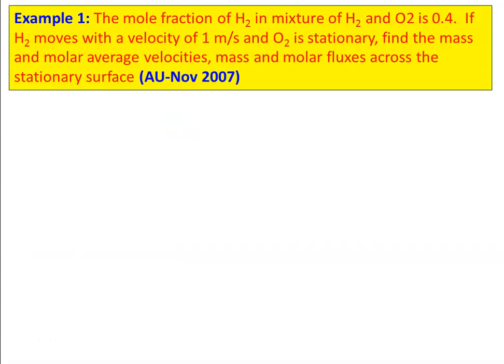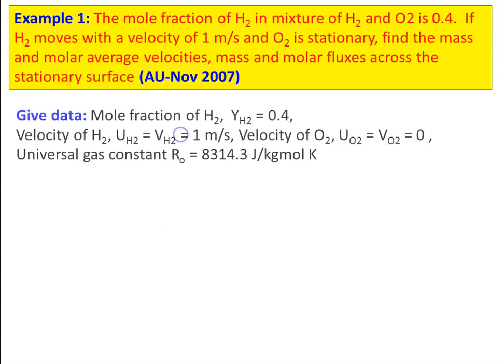Example number 1, from the November 2007 Anna University question paper. The mole fraction of hydrogen in a mixture of hydrogen and oxygen is 0.4. If hydrogen moves with a velocity of 1 meter per second and O2 is stationary, find the mass and molar average velocities, and mass and molar fluxes across the stationary surface. We write down the given data. Mole fraction of H2, YH2 = 0.4.